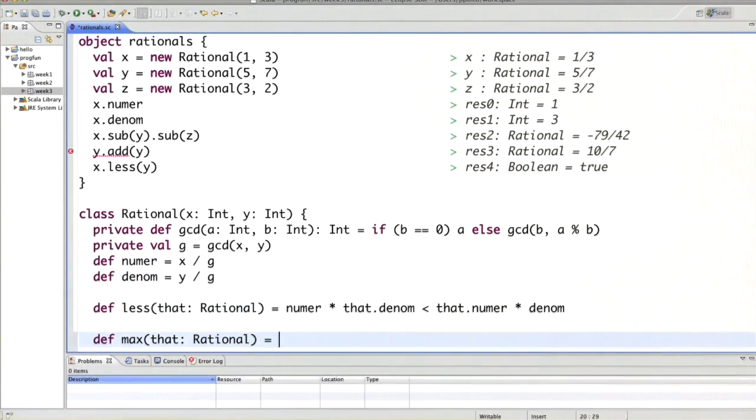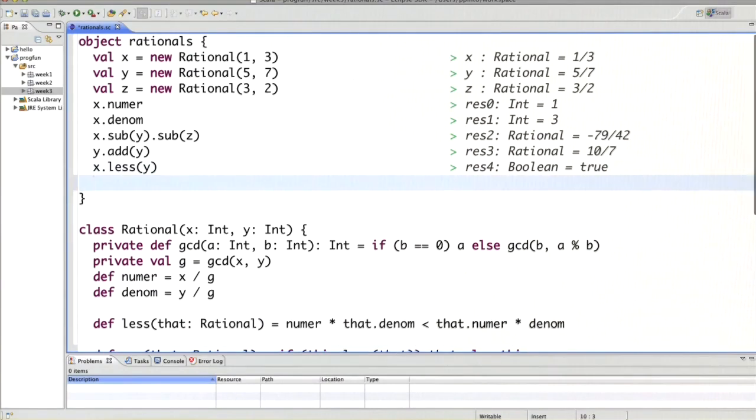But that means we have to refer to our rational number as a whole, and in fact there is a way to do that in most object-oriented languages. This is either called 'this' or 'self'. So 'this' refers to the current rational. So we would say if this is less than that, then we return that, otherwise we return this. And we can also test it. x.max(y) would be 5/7 because that's the bigger of the two.